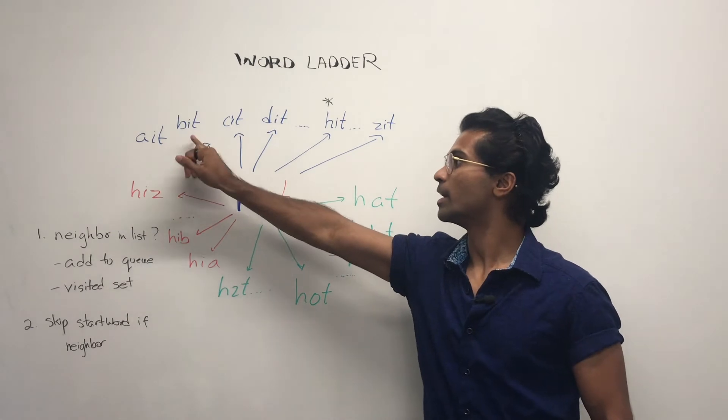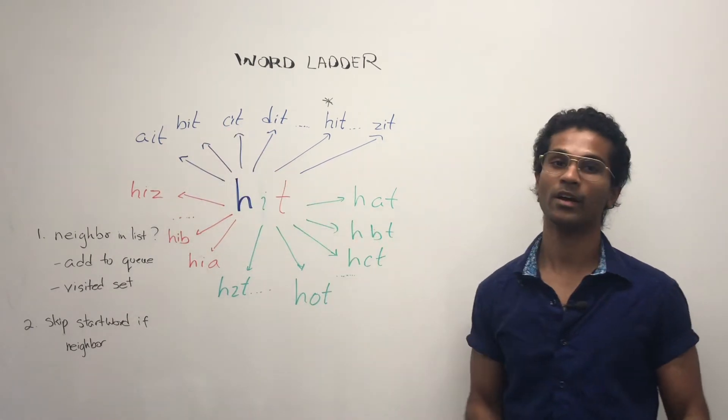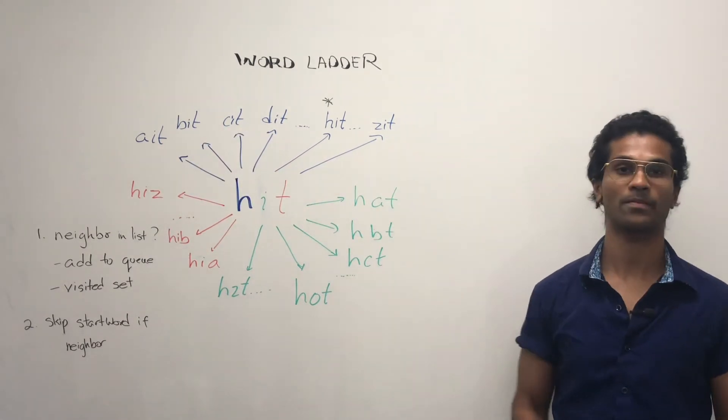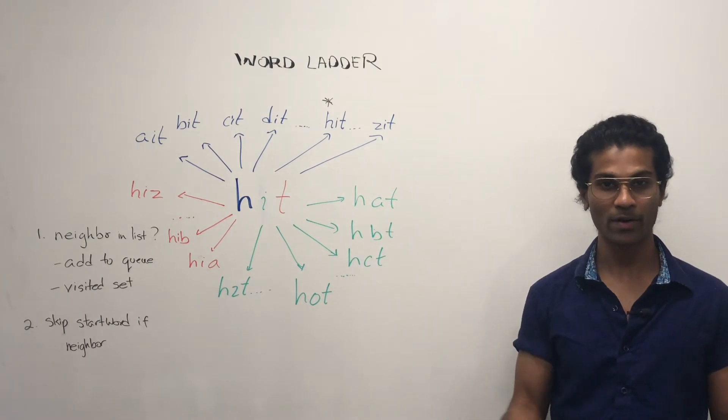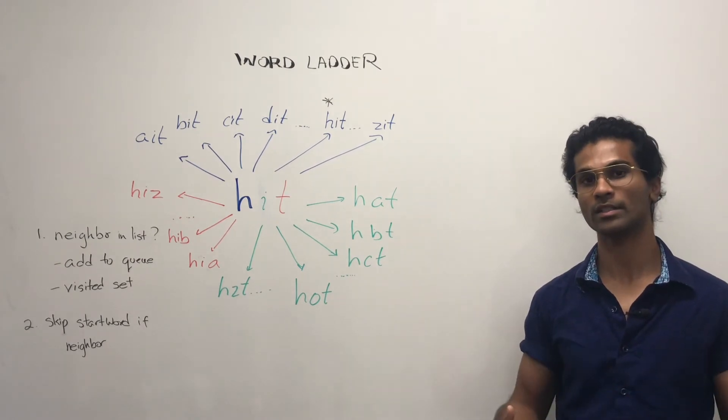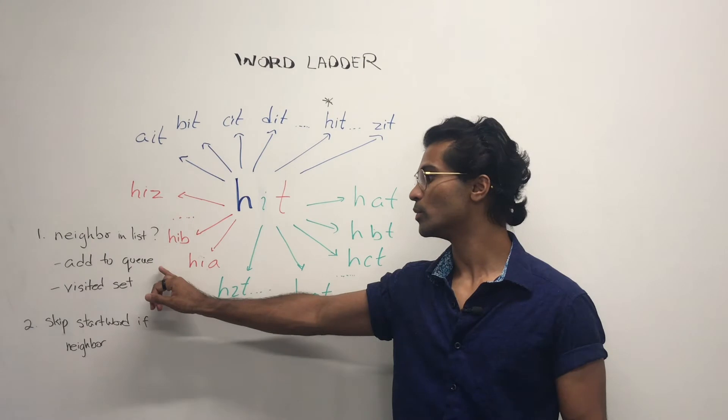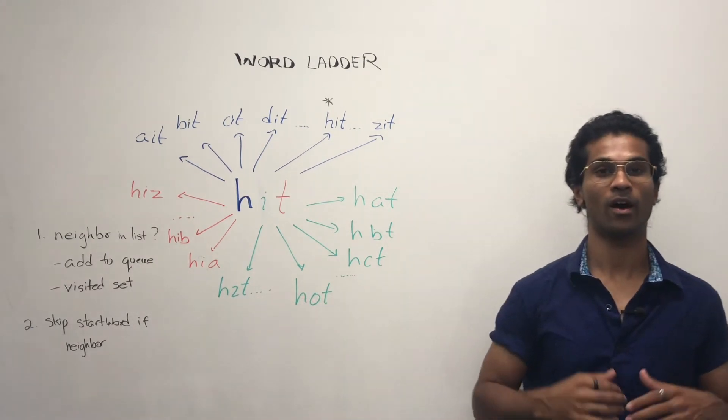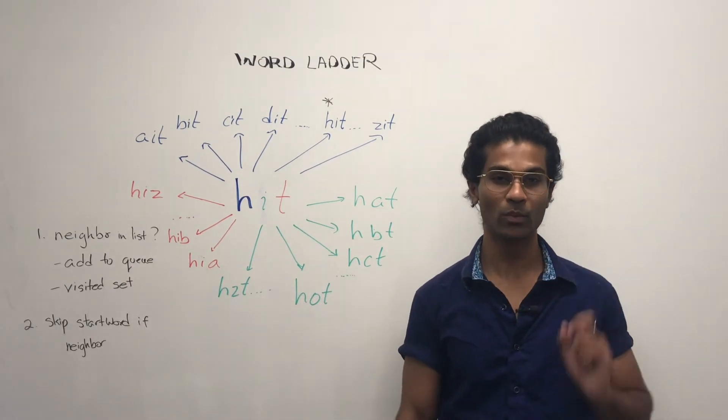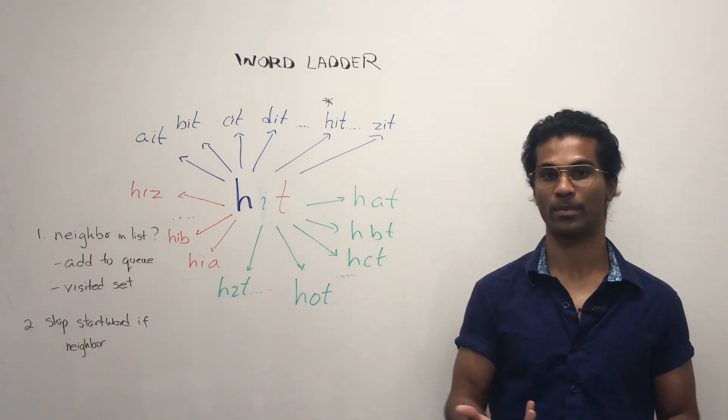So AIT, BIT, CIT, DIT all the way till ZIT. Now if a neighbor exists in the word list we are going to add it to the queue and add it to the visited set. Otherwise if our neighbor is actually the begin word we are going to skip it.